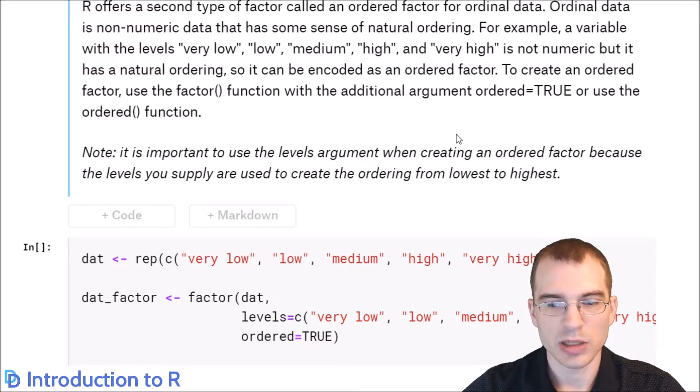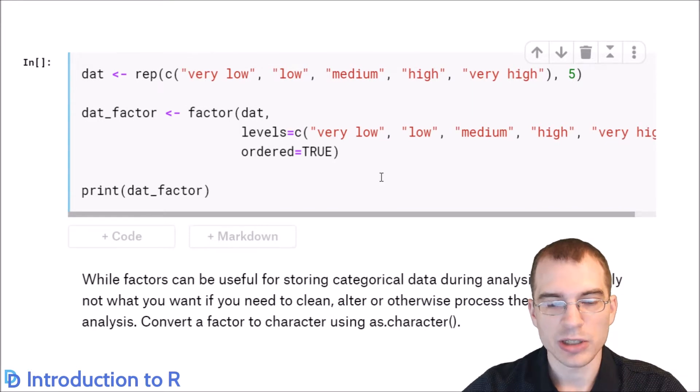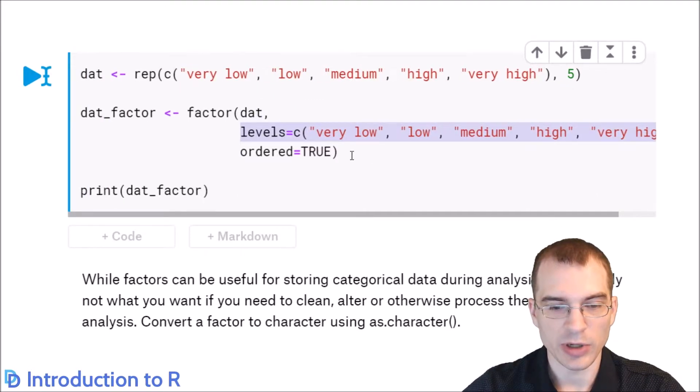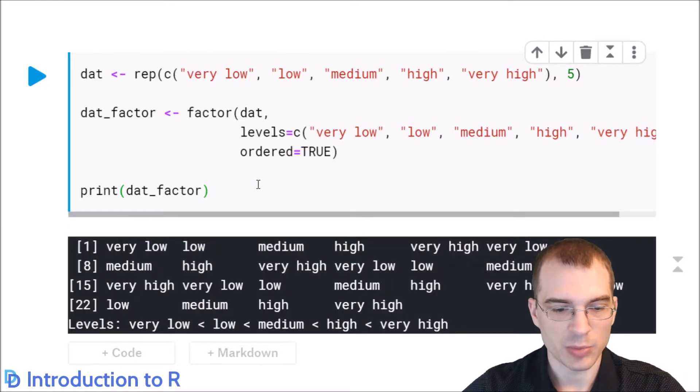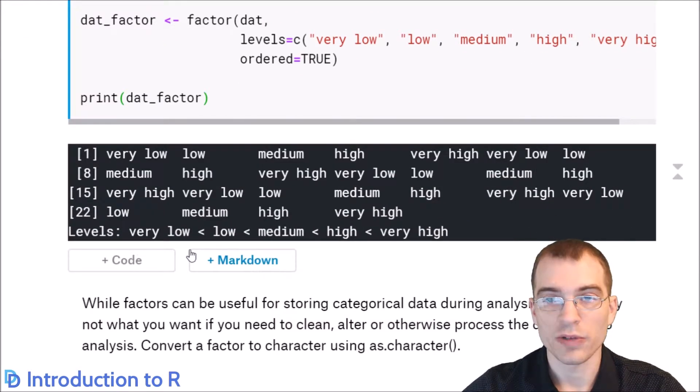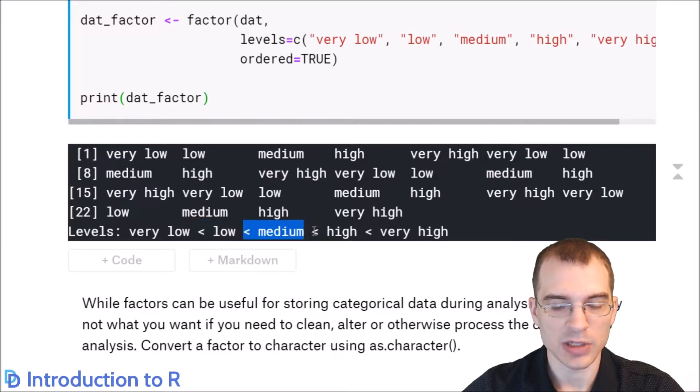So if you want to make an ordinal factor, when you create the factor, you just add this extra argument here, ordered equals true. So here we're making a new vector of some data with some different ordered levels. We're saying we want to make a new factor from it, from that data. The levels are these, and we want it to be ordered. So when we do that and we print it, you can see when you do an ordered factor, when it shows the levels, it shows that very low is less than low, is less than medium, etc. So it shows you the order as well as the levels.